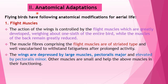Anatomical adaptations: the first anatomical adaptation is flight muscles. The action of the wings is controlled by the flight muscles, which are greatly developed, weighing about one-sixth of the entire body of the bird, while the muscles on the back remain greatly reduced. The muscle fibers of the flight muscles are striated type, are well vascularized, and can withstand fatigue after prolonged activity. The wings are depressed by the large muscle pectoralis major and elevated by pectoralis minor, with other smaller muscles assisting their functioning.